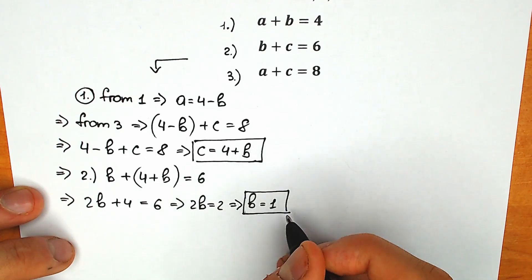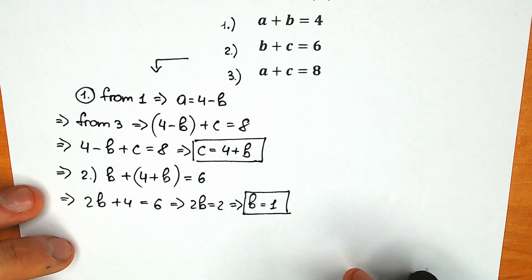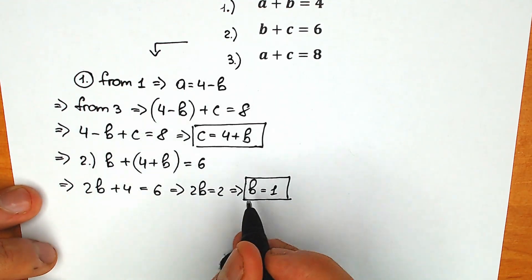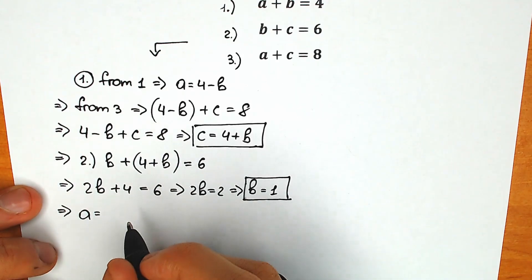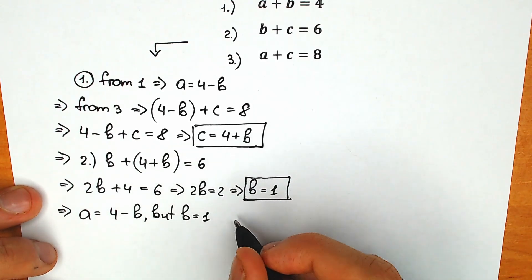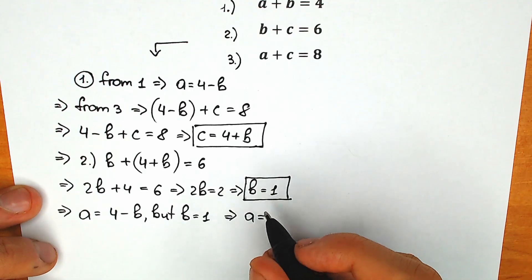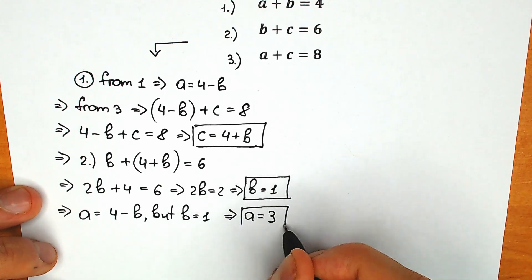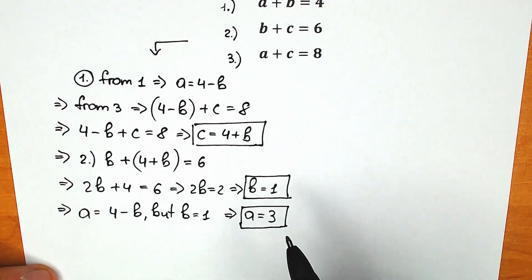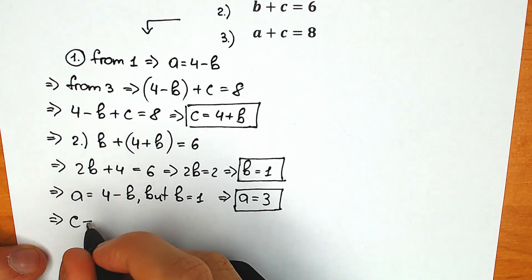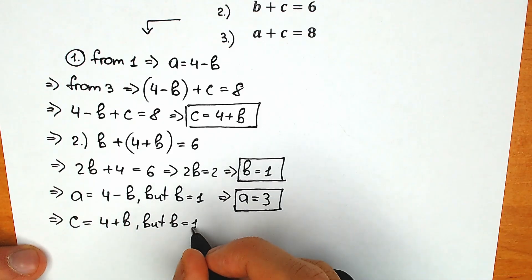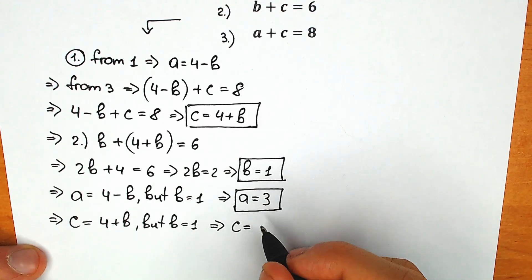We found b equals 1. Now from the expression a equals 4 minus b, we have a equals 4 minus 1, so a equals 3. And for c, we use c equals 4 plus b, which gives c equals 4 plus 1, so c equals 5.